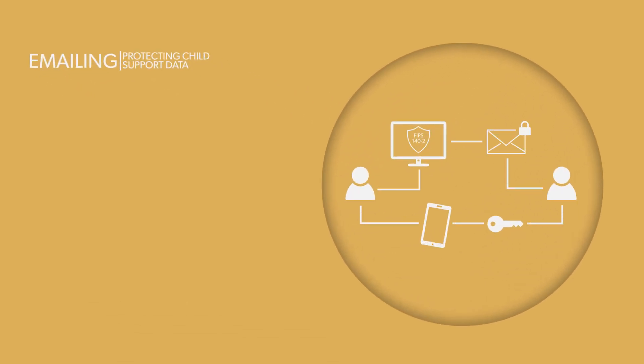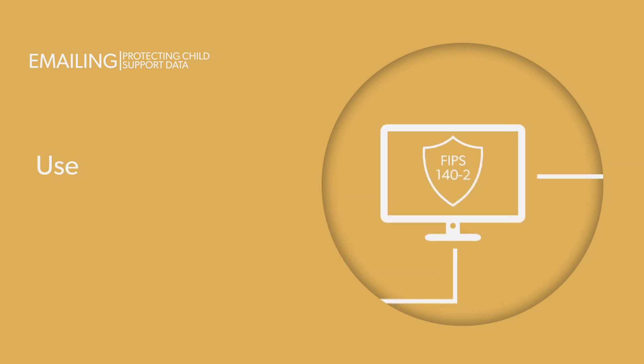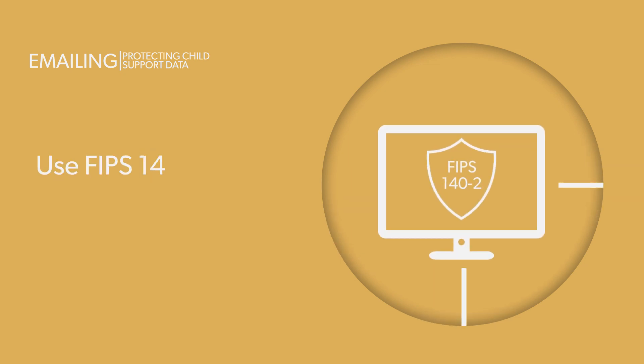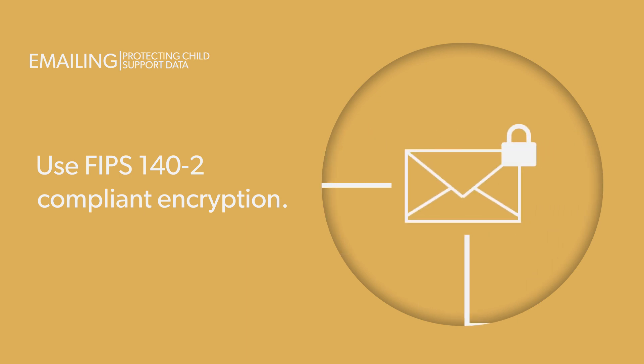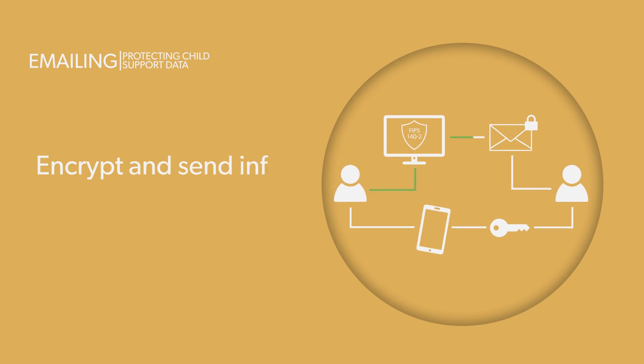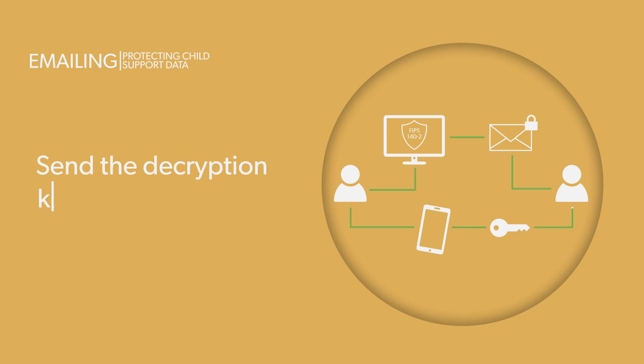Emailing: email is a big part of your work. State administrators should use FIPS 140-2 compliant encryption software for emailing personally identifiable information within your state network. Encrypt and send the information as an attachment, not in the body of the email. Send the decryption key separately via text, phone call, or voicemail.